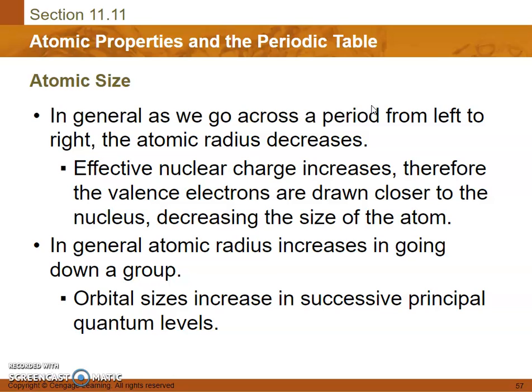Atomic size. In general, as we go across a period from left to right, the atomic radius decreases. Effective nuclear charge increases because there are more protons in the nucleus. Therefore, the valence electrons are drawn closer to the nucleus, decreasing the size of the atom.